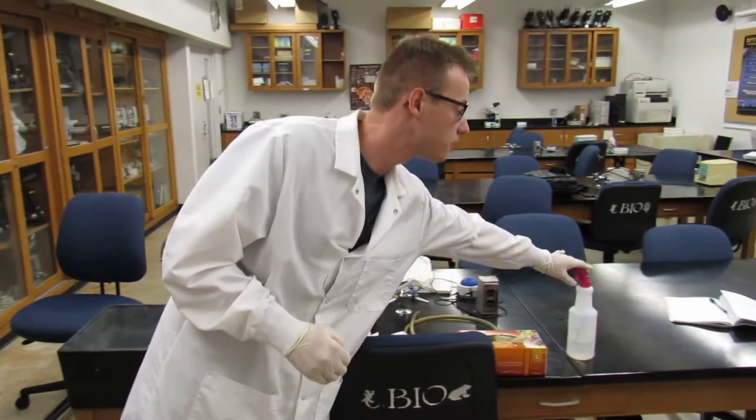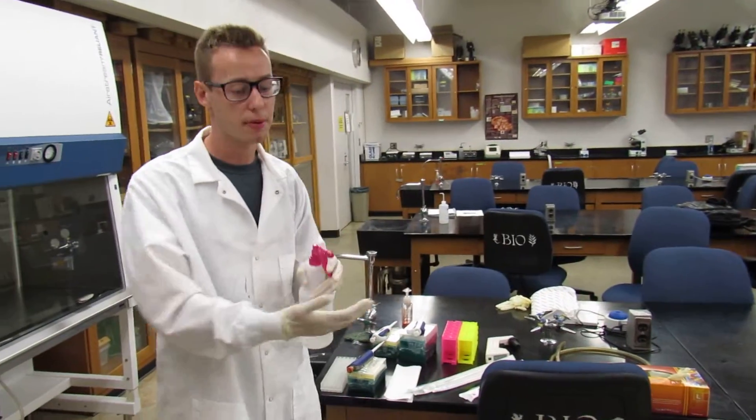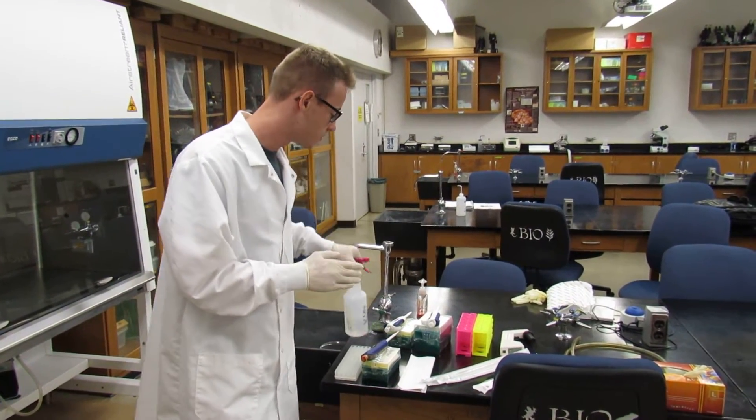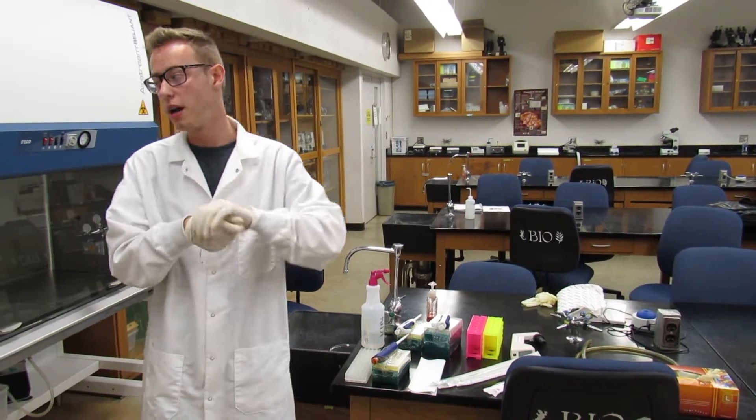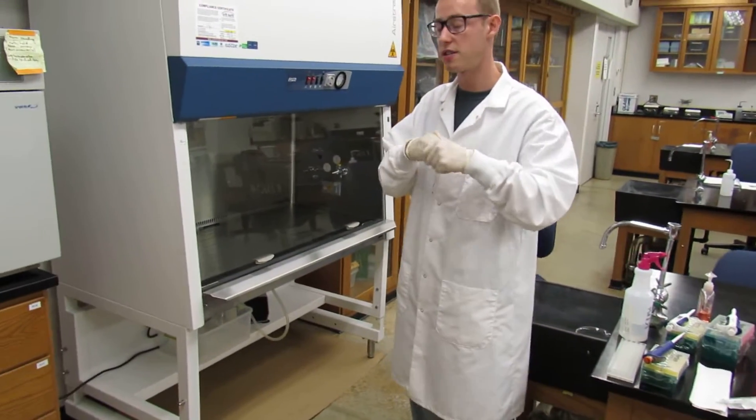Next, you're going to want to grab a pair of gloves and spray them with 70% ethanol like so. After you've sprayed and wiped down your gloves, you're going to want to move to a biosafety cabinet.